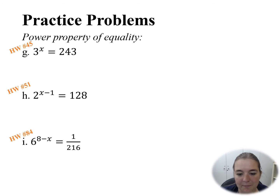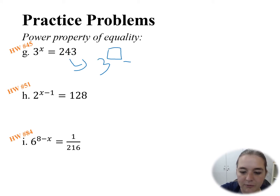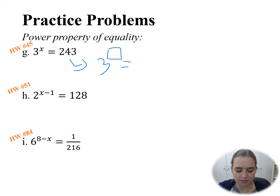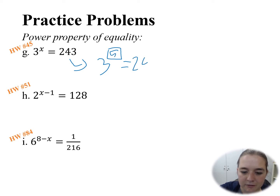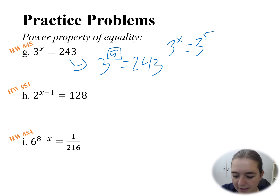Now let's talk about the power property of equality. It tells me I need the same base, and then the exponents must match. So if I have 3 to the power of x equals 243, I need to find 3 to the power of what gives me 243. I can work it out: 3 × 3 = 9, × 3 = 27, × 3 = 81, × 3 = 243. That's five 3s, so 3 to the power of 5 is 243. That means 3 to the power of x equals 3 to the power of 5, so x must equal 5.